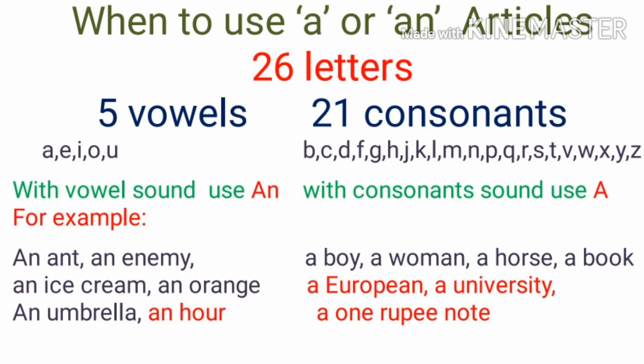The 21 consonants are b, c, d, f, g, h, j, k, l, m, n, p, q, r, s, t, v, w, x, y, z. Now what is the use of vowels or consonants here? With the sound of vowels, those nouns use an, and the nouns which give the sound of a consonant use a before them. Let's do some examples.